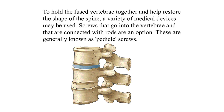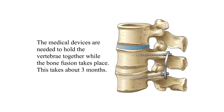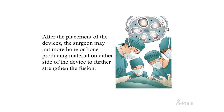To hold the fused vertebrae together and help restore the shape of the spine, a variety of medical devices may be used. Screws that go into the vertebrae and are connected with rods are an option; these are generally known as pedicle screws. The medical devices are needed to hold the vertebrae together while the bone fusion takes place — this takes about three months. After placement of the devices, the surgeon may put more bone or bone-producing material on either side of the device to further strengthen the fusion.